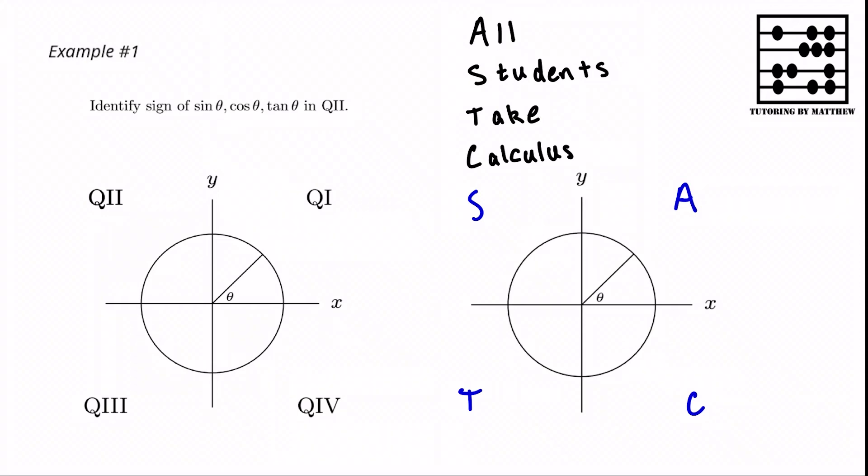Then we can easily determine the sign of these three trig functions in quadrant 2. Quadrant 2 corresponds to S in ASTC, and so only the sine is positive. Then the tangent and the cosine are negative.